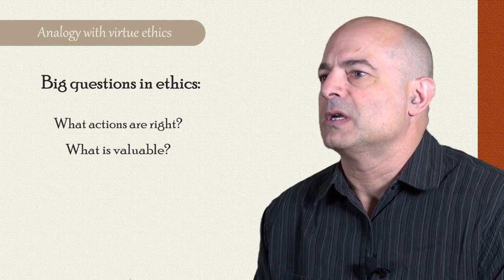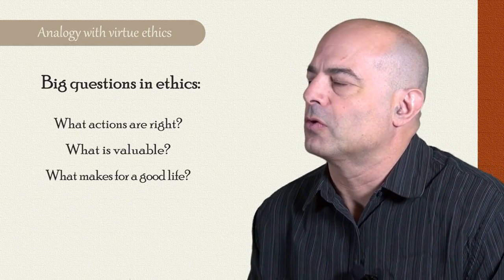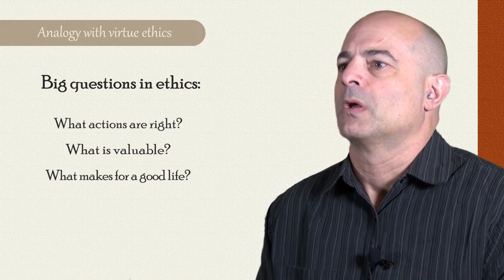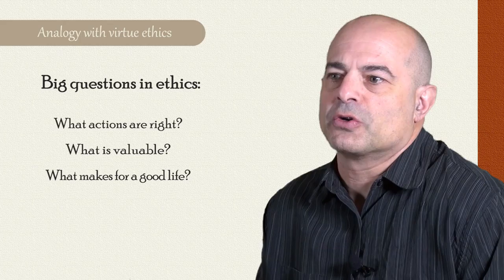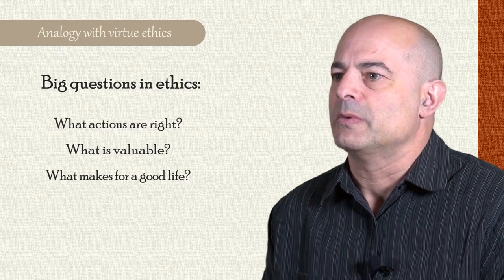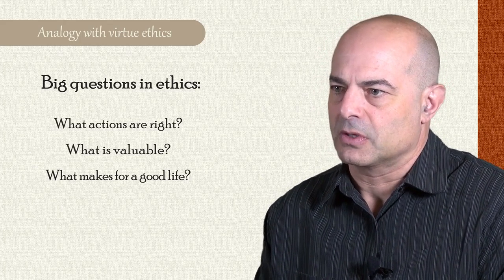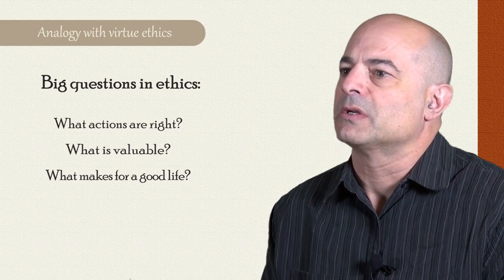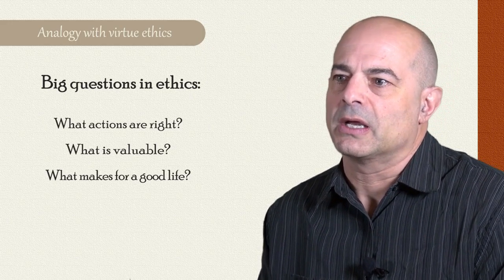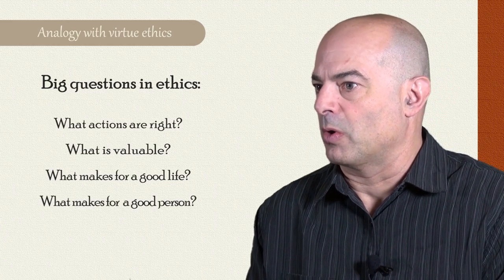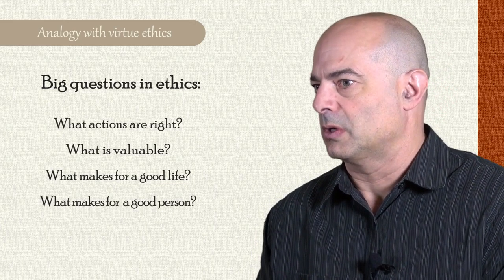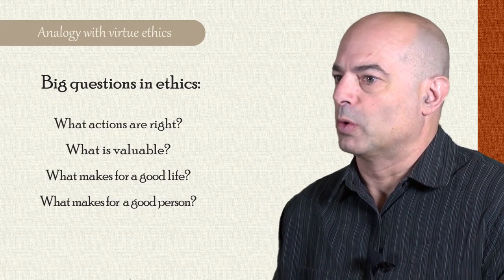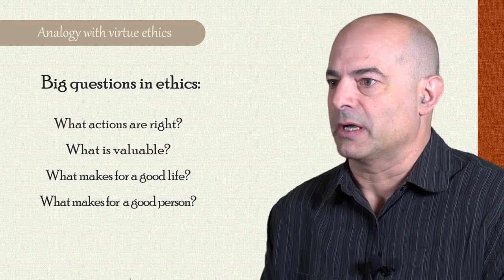A third question is what makes for a good life, or a desirable life, or a life worth living — what does it mean to flourish or thrive as a human being? Those are questions about what kind of life should I lead, what does a good life look like. And then finally, in ethics, we're concerned with what makes for a good person, or in other words, what makes for a virtuous person — what does that consist in, what does that look like.